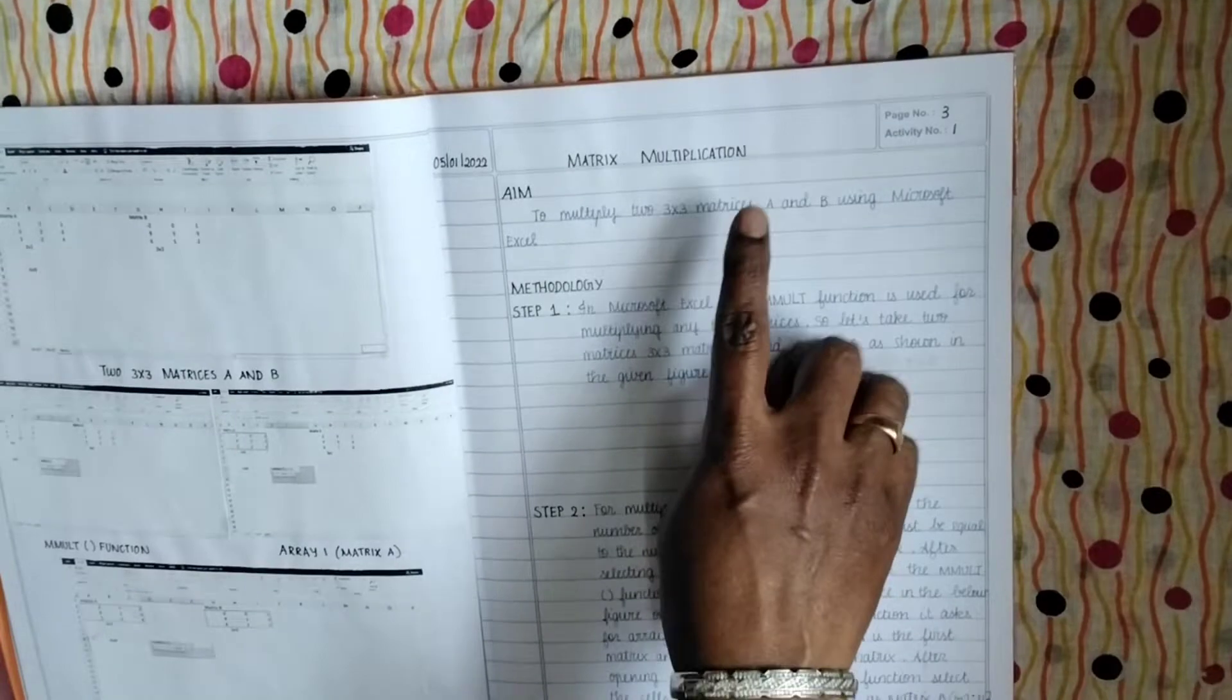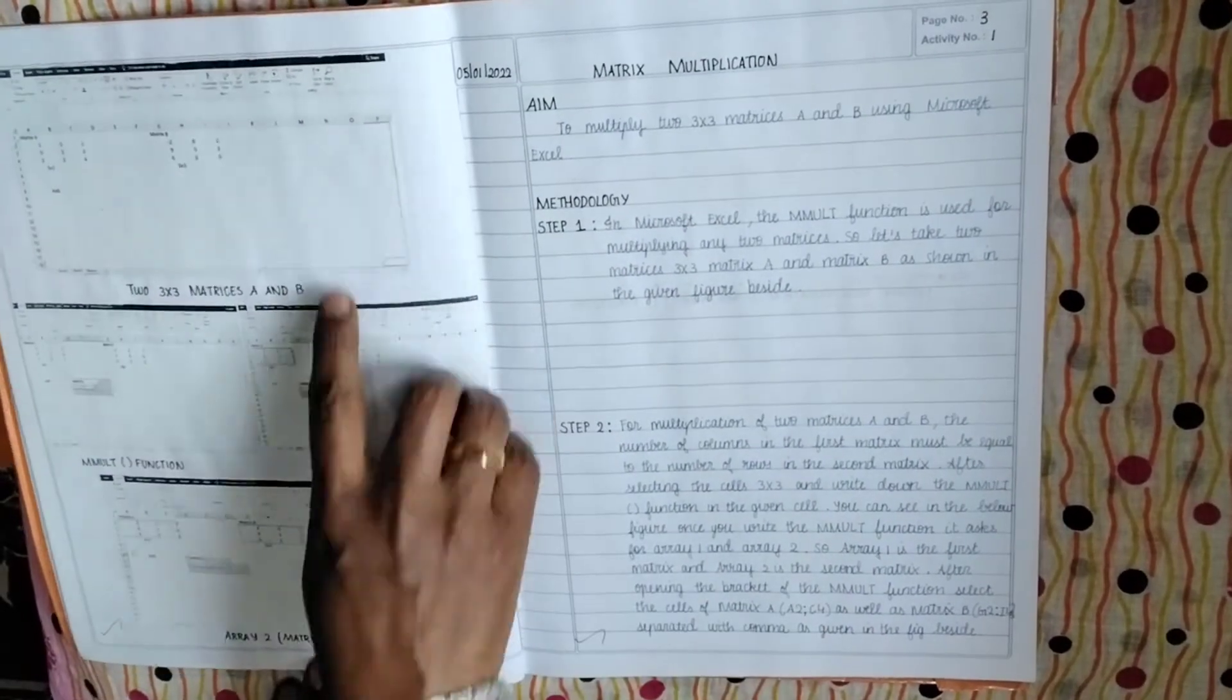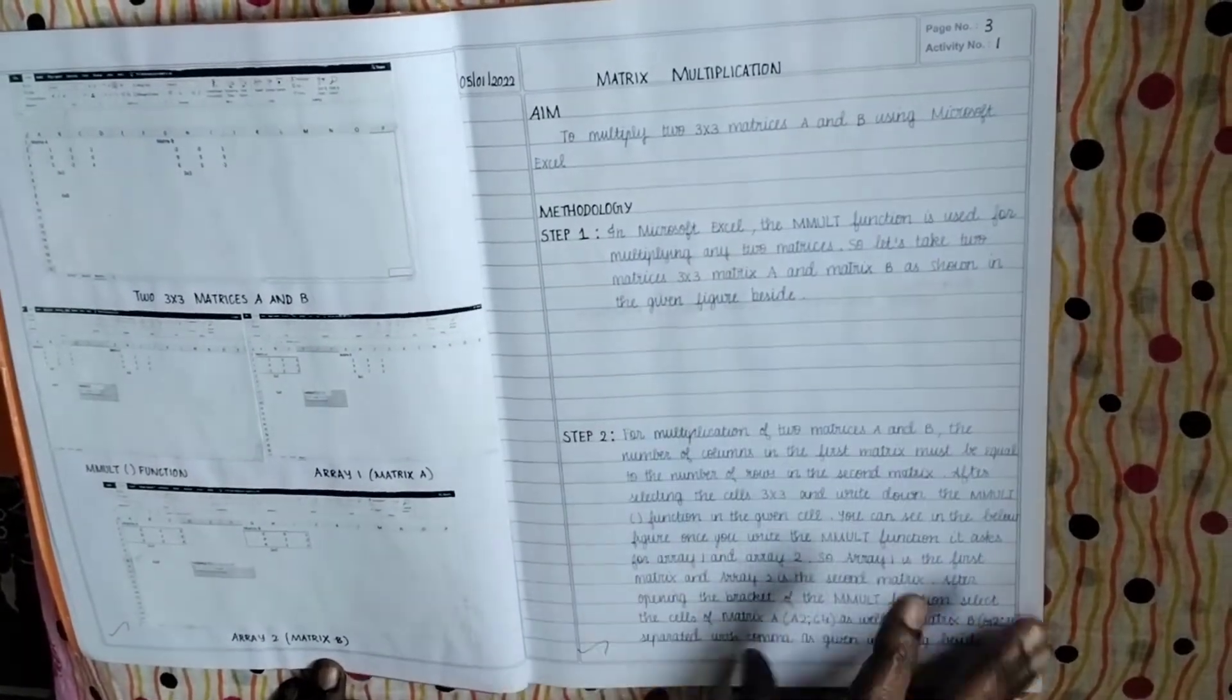So see how this is being done. Matrix multiplication, everything they are going to do on Excel. This is the evidence of their Excel sheet - how matrix multiplication, what's the aim, methodology, stepwise.